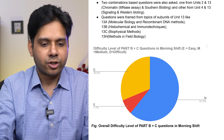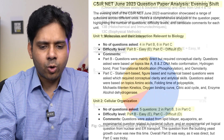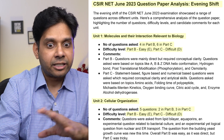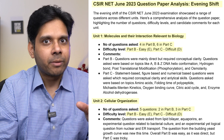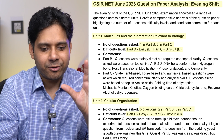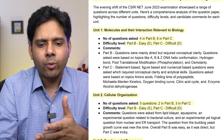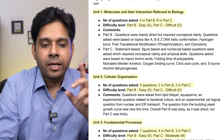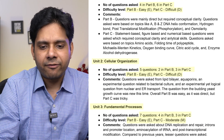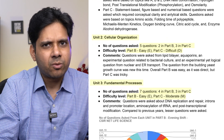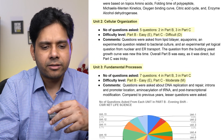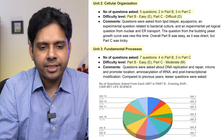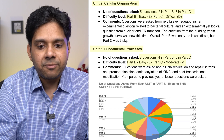Many units had double-digit questions and those are the units you have to pay attention to. Now moving to the evening shift — it follows a similar trend. Unit 1 had four questions in Part B and six in Part C; Part B was easy, Part C was difficult. Unit 2, Cellular Organization, had five questions — two in Part B and three in Part C; Part C was difficult. Unit 3, Fundamental Processes, had seven questions — four in Part B and three in Part C; Part B was easy and Part C was moderate.